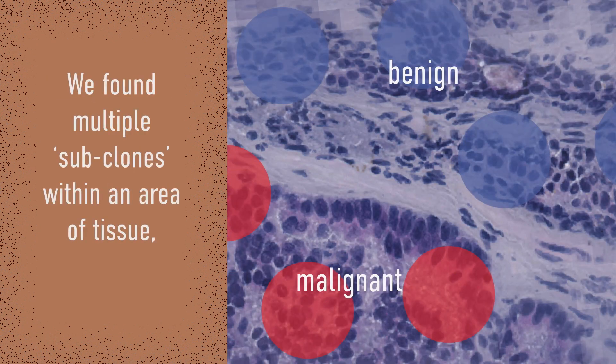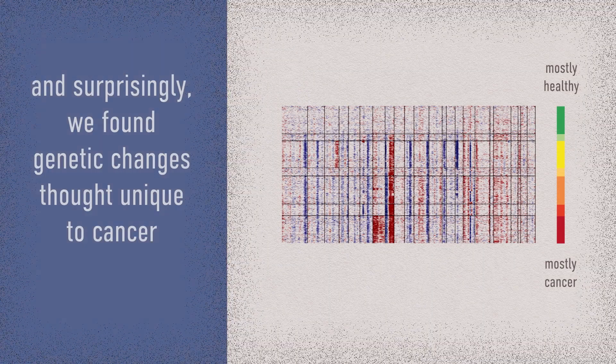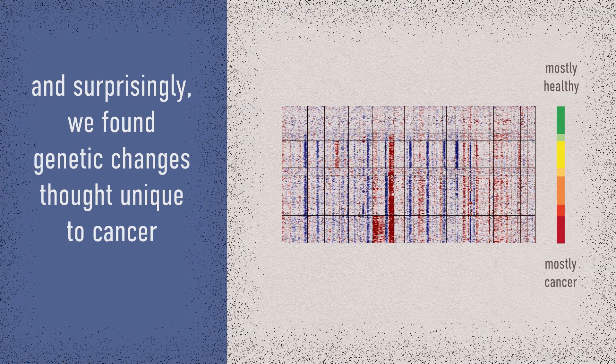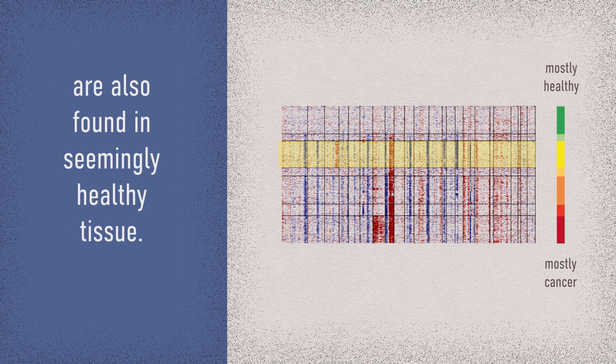We found multiple subclones within an area of tissue, and surprisingly, we found genetic changes thought unique to cancer are also found in seemingly healthy tissue.